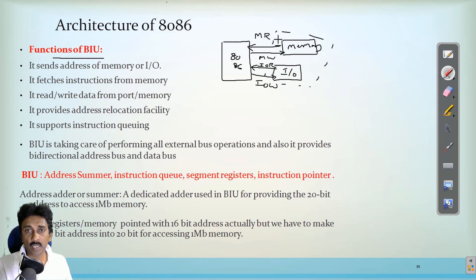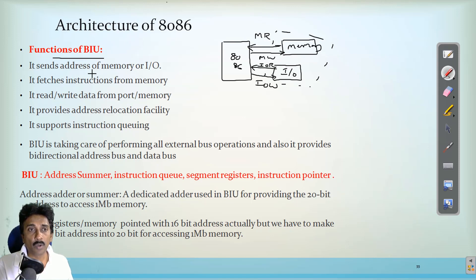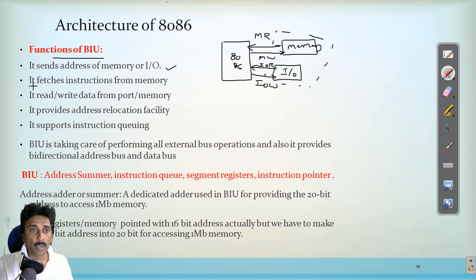These four control signals are necessary to send the address as well as the data. The CPU will send the address of the memory or the address of the I/O — that is the first point. Second point: instructions are coming from the memory to the microprocessor. The microprocessor fetches the instructions from the memory, meaning that it reads the instructions.